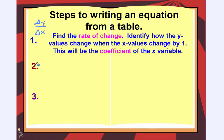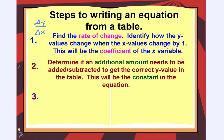Step number two: determine if an additional amount needs to be added or subtracted to get the correct y value in the table. Sometimes you're going to need to do more than just multiplying — you're going to have to add something or subtract something. That's where the second step comes in. This additional amount that you add or subtract is going to be that constant in the equation.